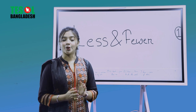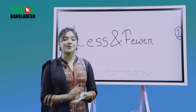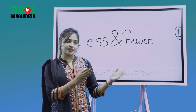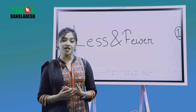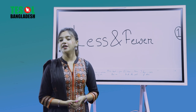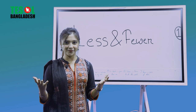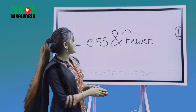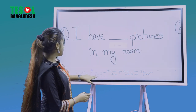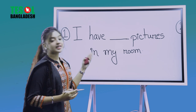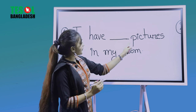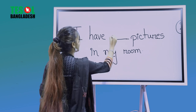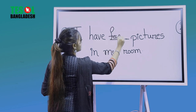Less is basically used when something is uncountable. For example, how many humans are in this market? The answer is fewer, because humans are countable. And our first question — I have dash pictures in my room. Pictures? Countable or uncountable? It is countable, right? So the answer is fewer.